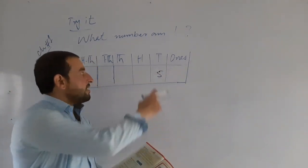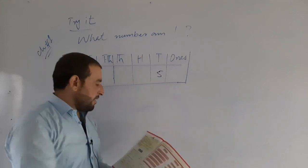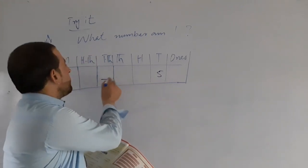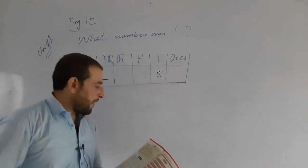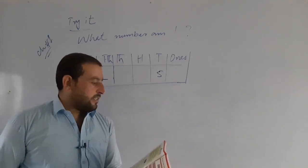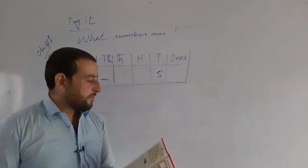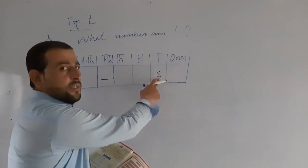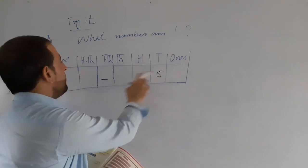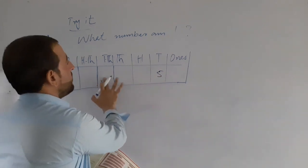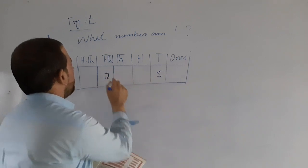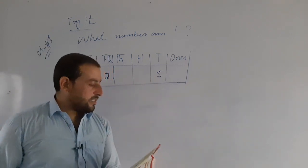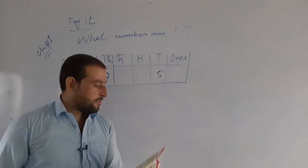My 10,000 digit is 3 less than my 10s digit. My 10s digit is the greatest one-digit number.